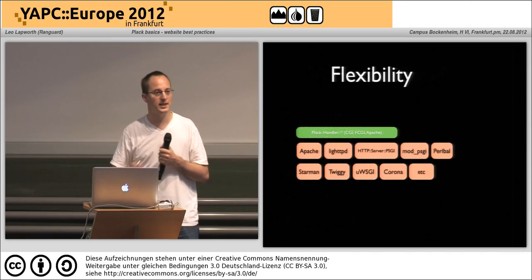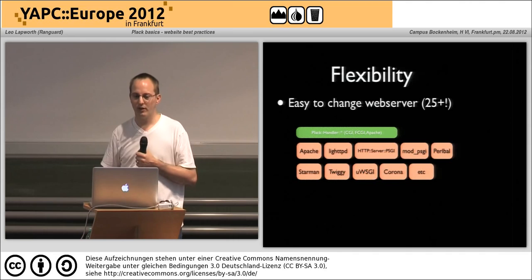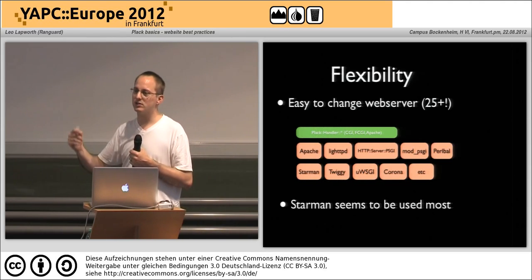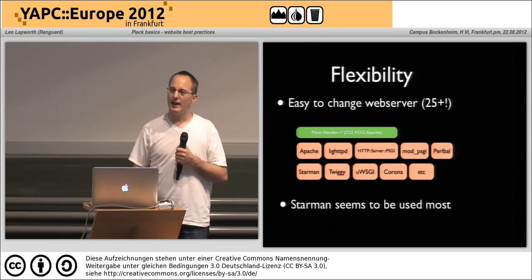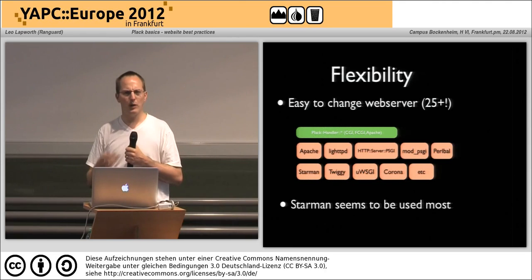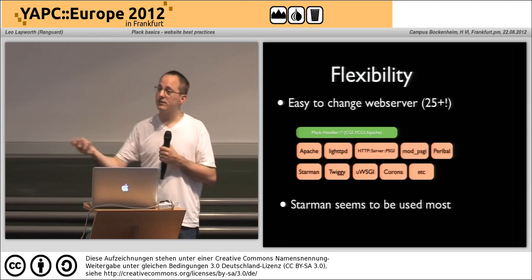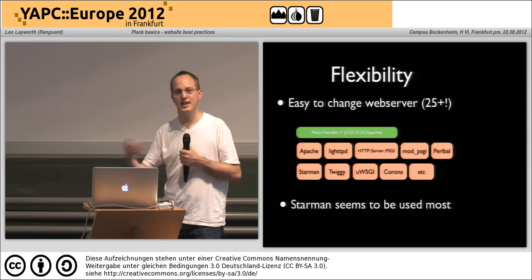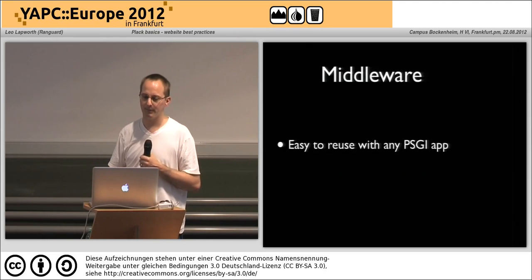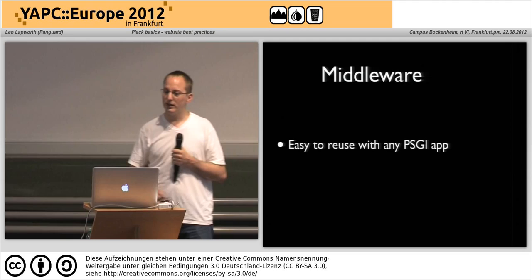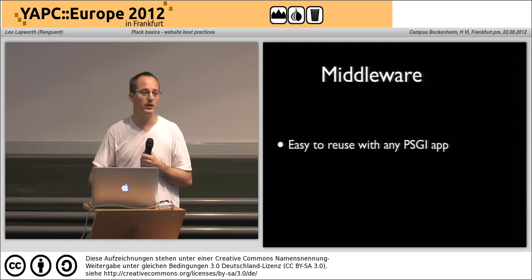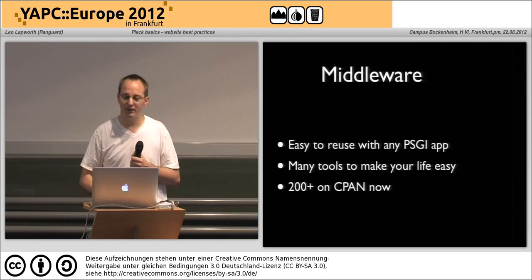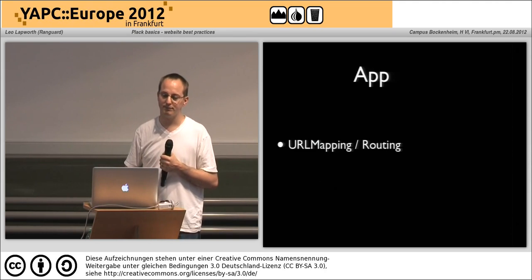So I started with why use Plack, and hopefully you can see that it's flexible, there's a huge amount of middleware, lots of apps, and development, testing and deployment are all made easier. The flexibility means you can move between web servers and just test them out — at work we had a problem when upgrading to mod_perl 2 and we wondered if Starman was better. The difference in loads on our machine was amazing when we switched over, and we didn't have to recode our entire system. The middleware means we can reuse it in any PSGI app. There are well over 200 of these on CPAN.